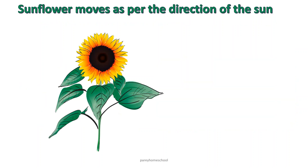Plants also show some movements, like the sunflower. Sunflower moves as per the direction of the sun. So wherever the sun moves, the sunflower faces the sun. It moves its direction according to sun movement.